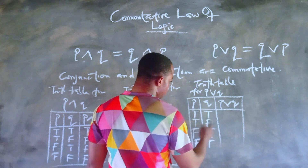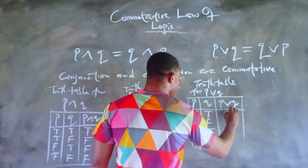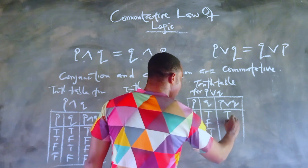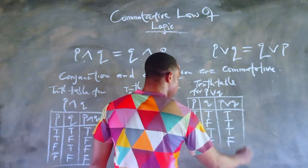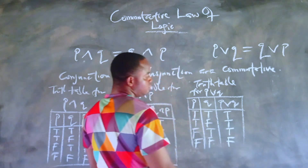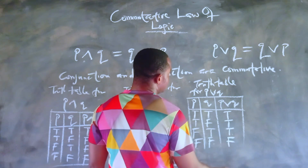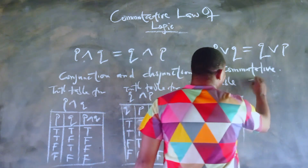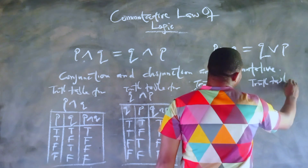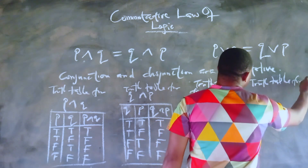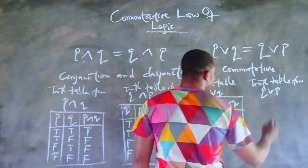For an OR statement to be true, you just need one of the two statements to be true. You'll notice both are true in the first condition, one statement is true in the next two conditions, and only in the last case are both statements false. Let's go on and draw the truth table for Q or P — this time Q first — and see if it is the same as the truth table obtained for P or Q.